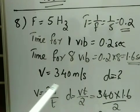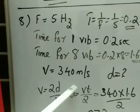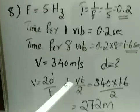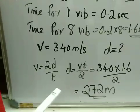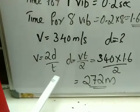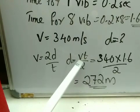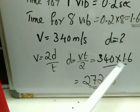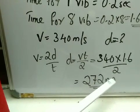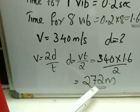Velocity of sound in air is given as 340 m/s. We find the distance between the cliff and the observer using D = V×T/2 = 340 × 1.6 / 2 = 272 meter.